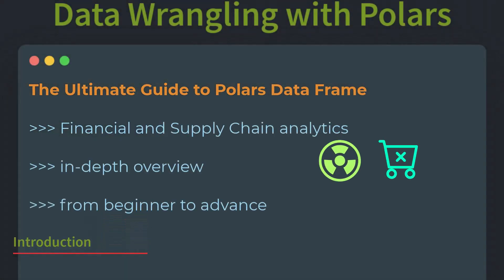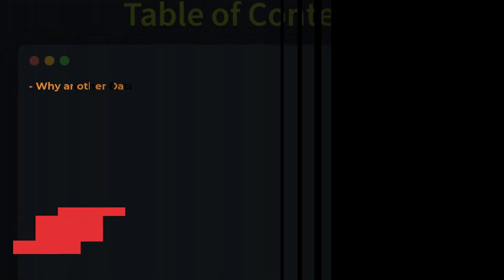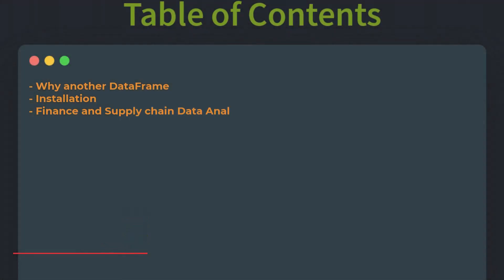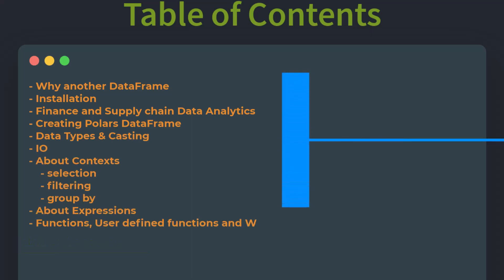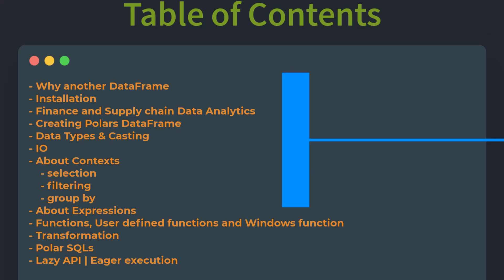Hello friends. Welcome to my next tutorial on the data wrangling tutorial series — the ultimate guide to data wrangling with Python using Rust Polars DataFrame to work with finance and supply chain data analytics. In the first few videos we learned about the Polars DataFrame and created some dummy data for finance and supply chain. We also learned about data types, IO, context, and expression.